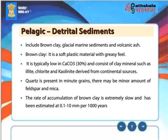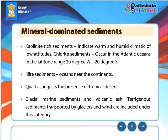Brown clay is a soft plastic material with a greasy feel. It is typically low in calcium carbonate (30%) and consists of clay minerals such as illite, chlorite, and kaolinite derived from continental sources. Quartz is present in minute grains, with minor amounts of feldspar and mica. The rate of accumulation of brown clay is extremely slow, estimated at 0.1 to 10 millimeters per 1,000 years. Kaolinite-rich sediments indicate warm and humid climatic conditions of low latitudes. Chlorite sediments occur in the Atlantic Ocean in the latitude range 20° W to 20° S. Illite sediments occur in oceans near the continents, and quartz suggests the presence of tropical desert.